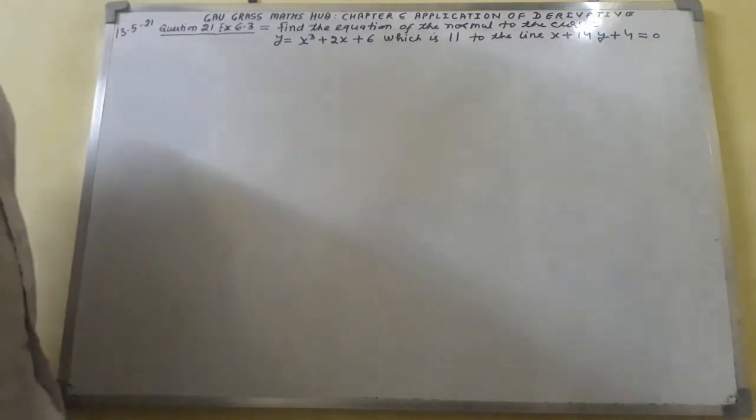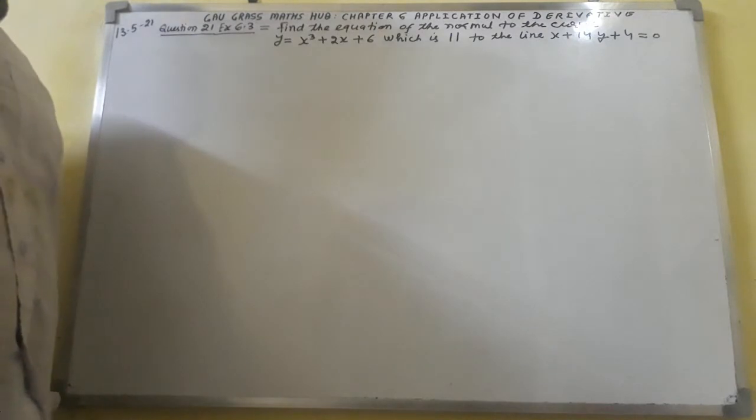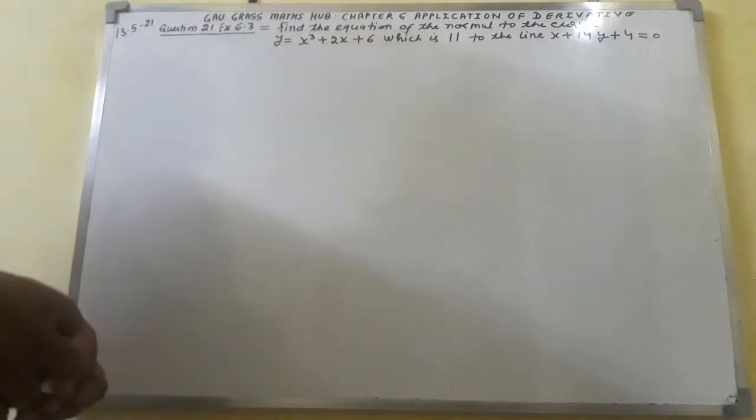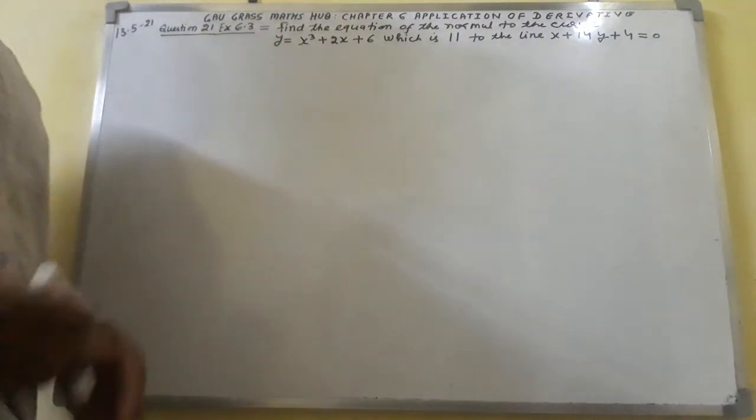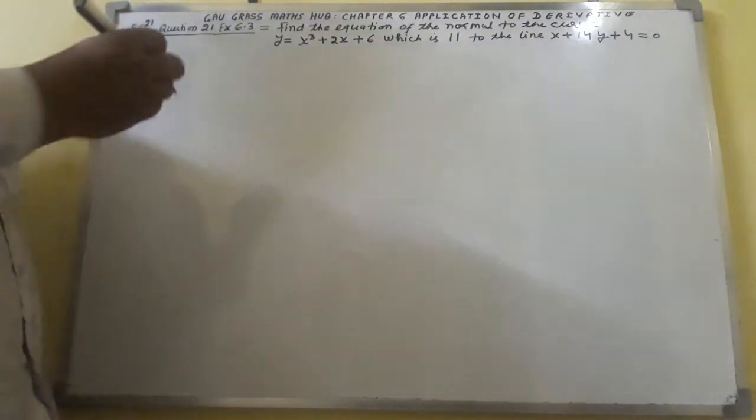The question is: find the equation of the normal to the curve y equals x cubed plus 2x plus 6, which is parallel to the line x plus 14y plus 4 equals 0. Now come to the solution.